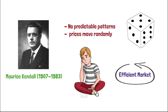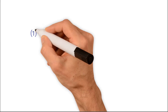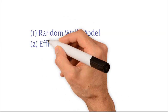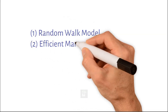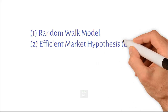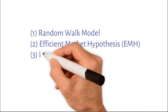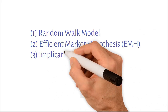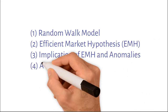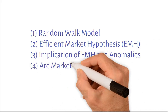In this video, I am going to discuss four aspects of stock market efficiency: the random walk model, the efficient market hypothesis (also known as EMH), the implications of EMH, stock market anomalies, and whether markets are efficient.